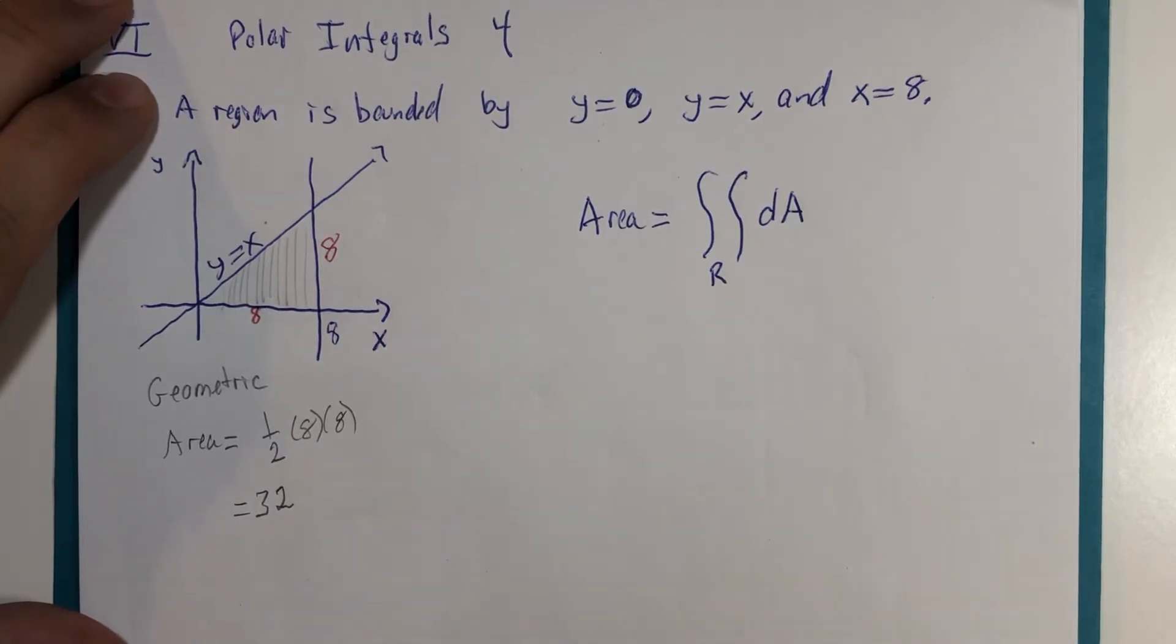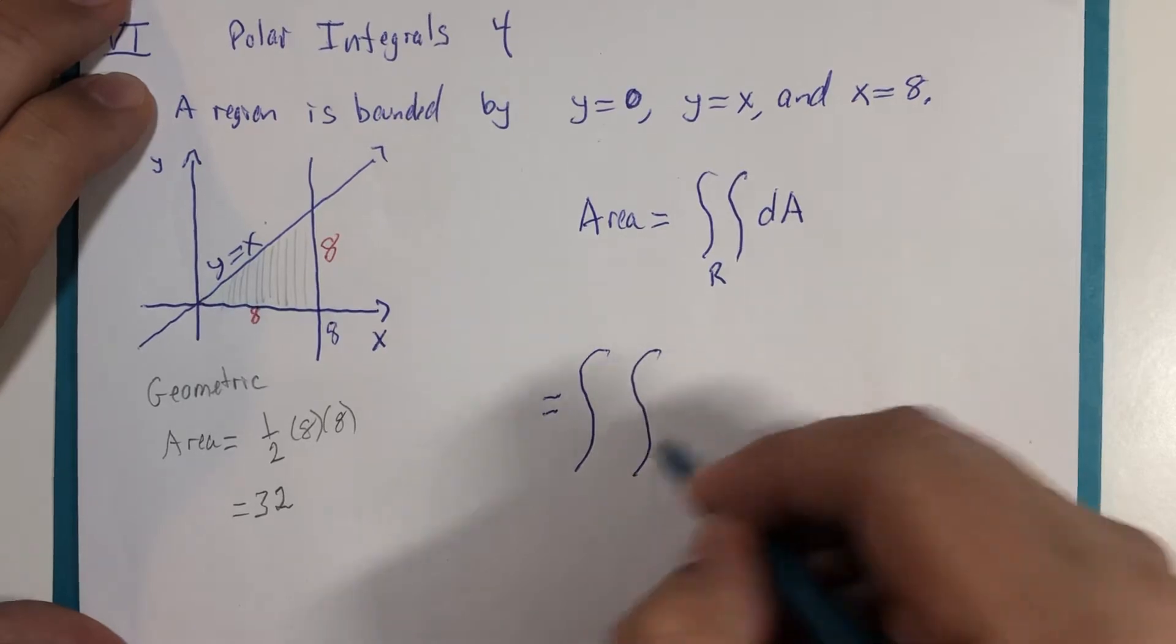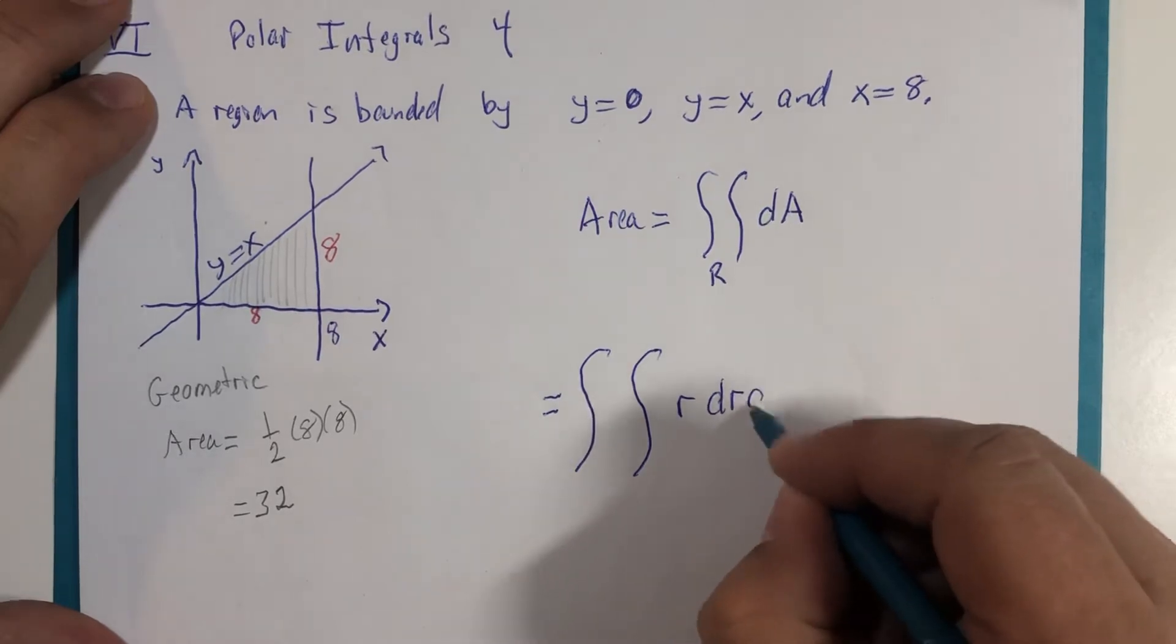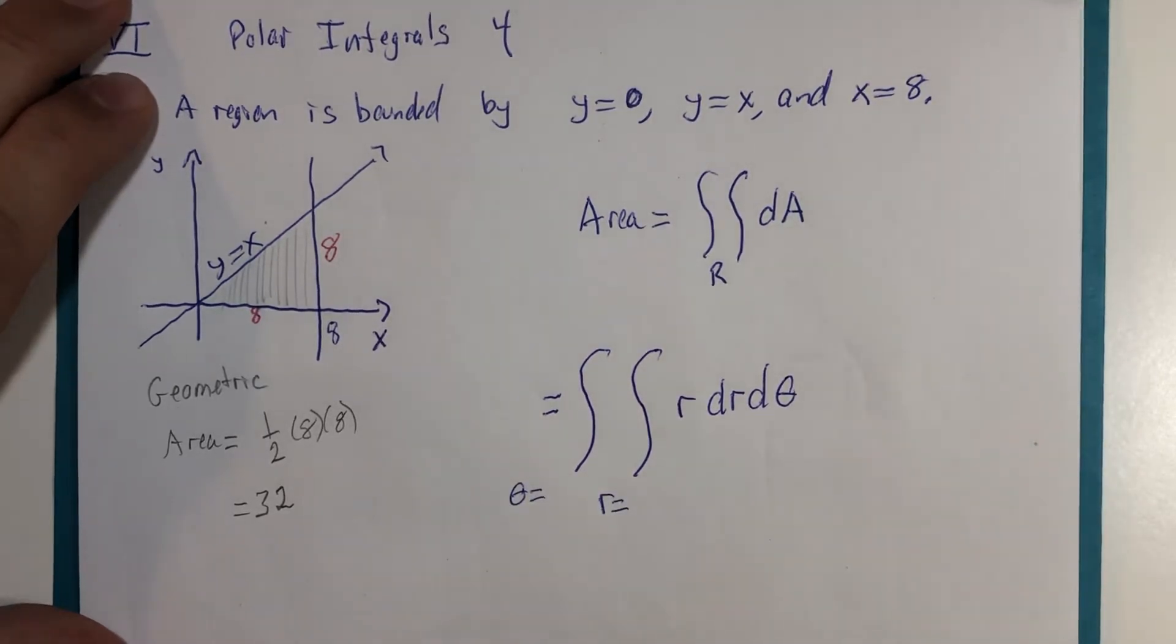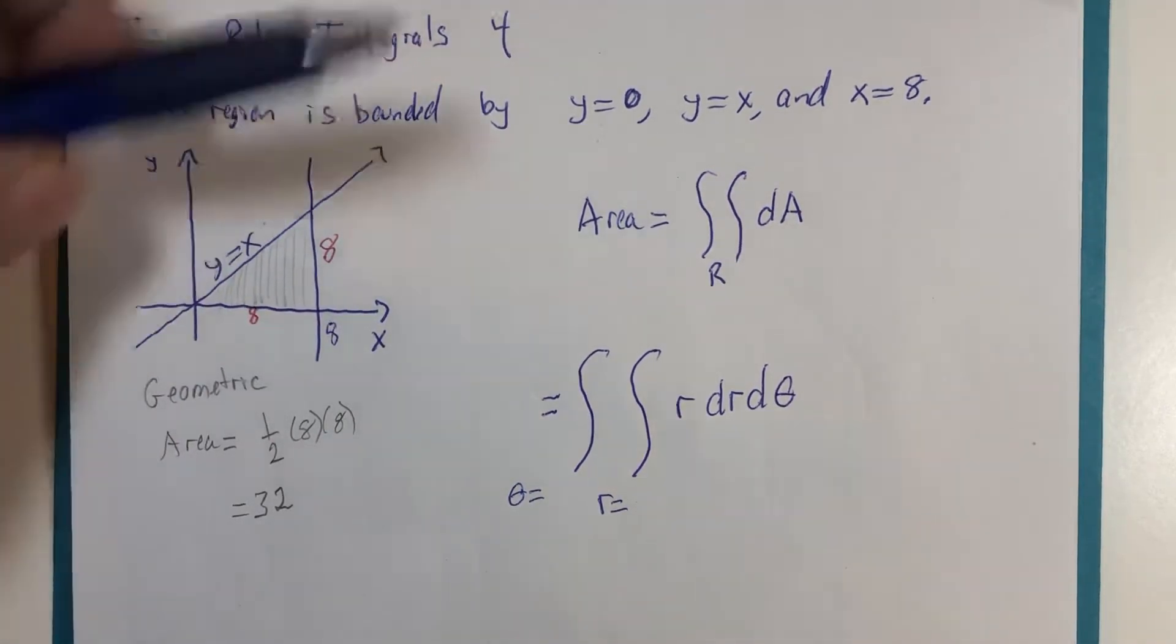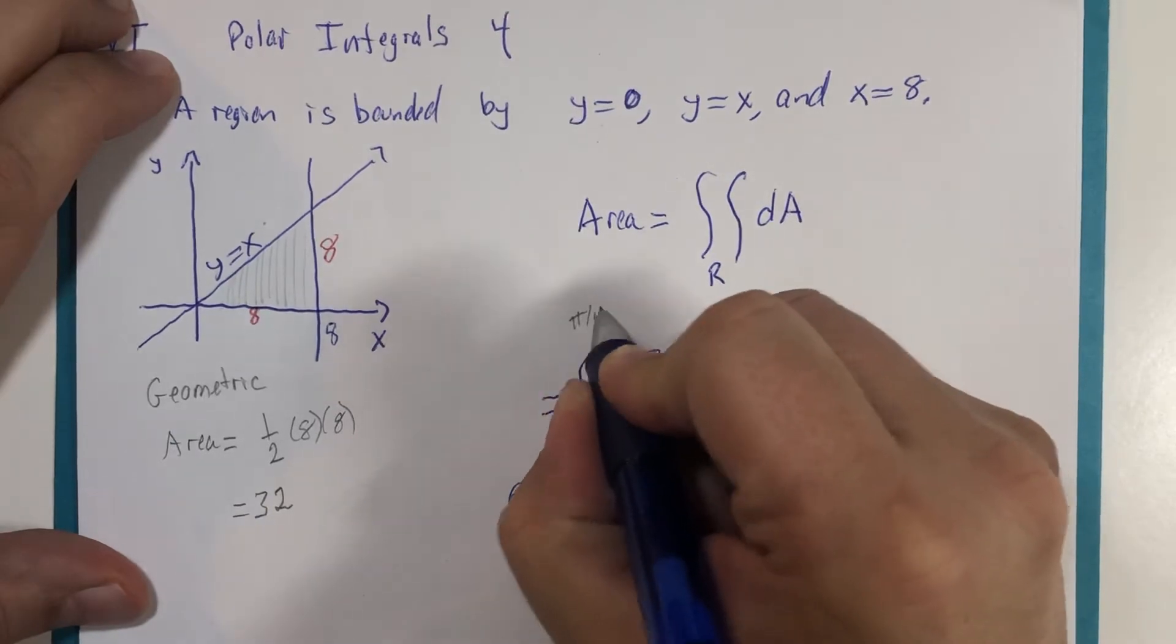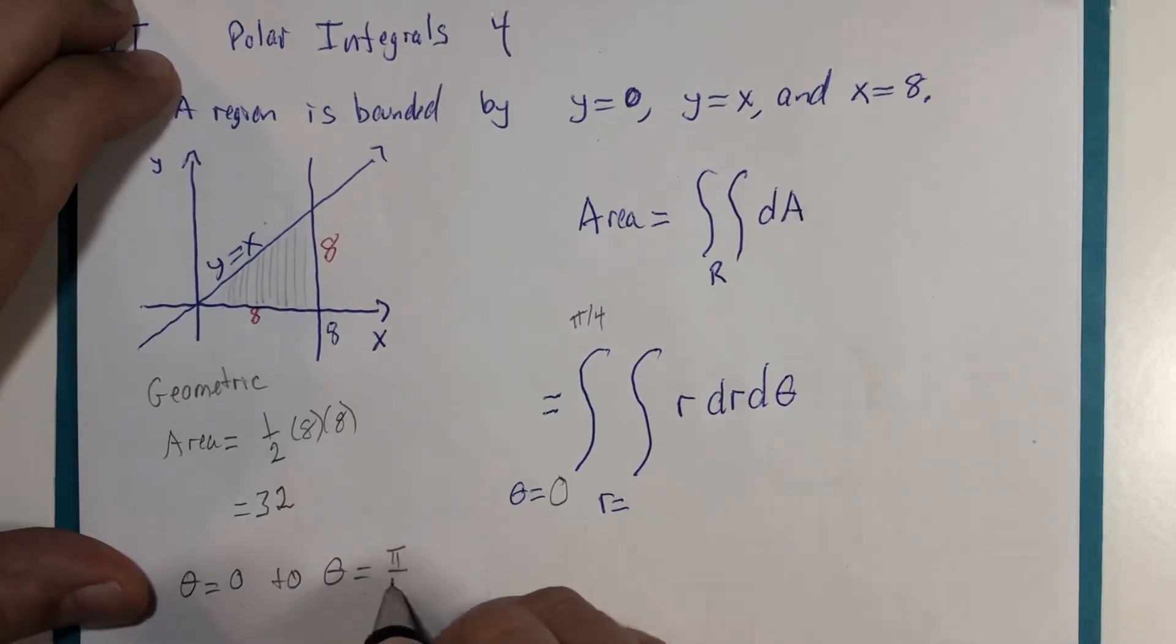Now, the polar version of this problem will be set up. Remember, dA becomes r times dr d theta. And those would be theta boundaries, and these would become r boundaries. Maybe we can just do some of this by observation. r goes from 0 to whatever that angle is. And in this line of slope 1, that is a 45-degree angle. So theta goes from 0 to pi divided by 4.